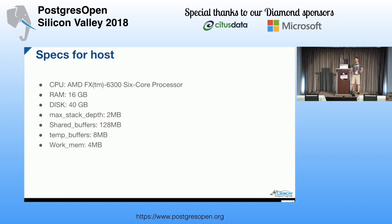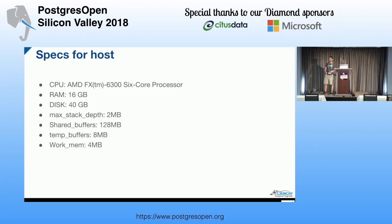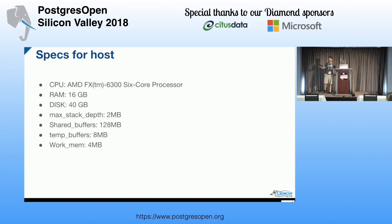First, background information. These are the specs of the host I was running Postgres on — useful if you're going to try to guess along how this is going to break Postgres. Six-core AMD processor. This is my old trusty Linux desktop in my apartment. 16 gigs of RAM, 40-gig disk partition. Max stack depth, shared buffers, work_mem — all defaults from Ubuntu. Just installed the package, created an initDB every single time.